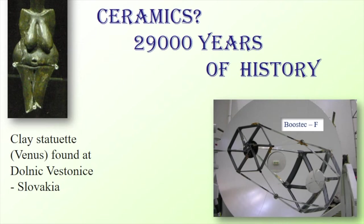The history of ceramics goes back to more than 29,000 years ago. It spans from the time when clay figurines were fired in primitive kilns at about 700 degrees, like the Venus found in Dolničić in Slovakia, to now high-quality silicon carbide employed in telescope mirrors for astronomy.